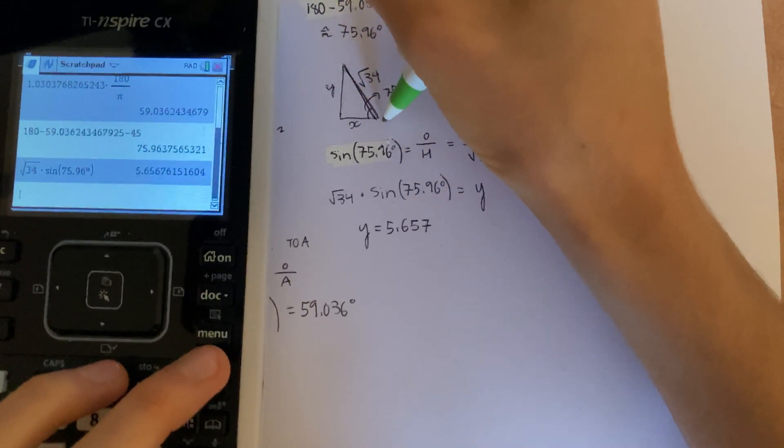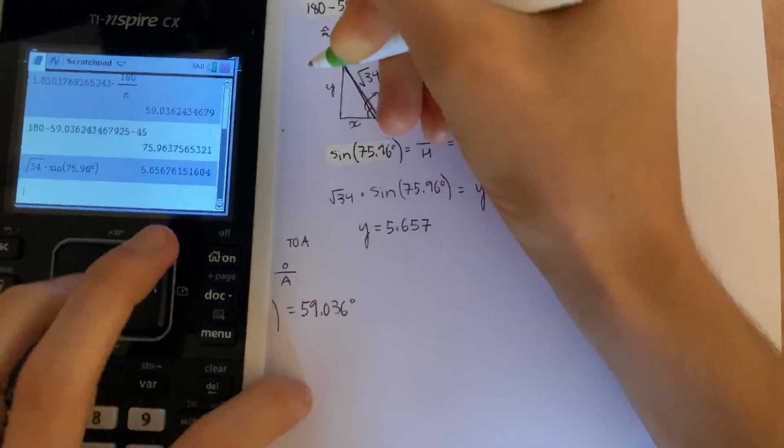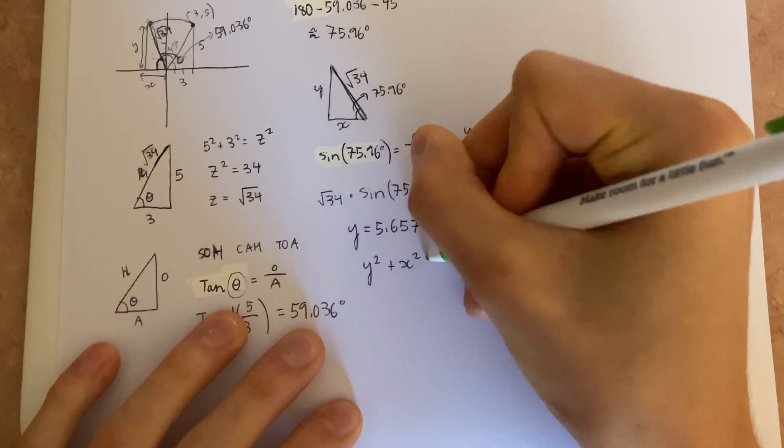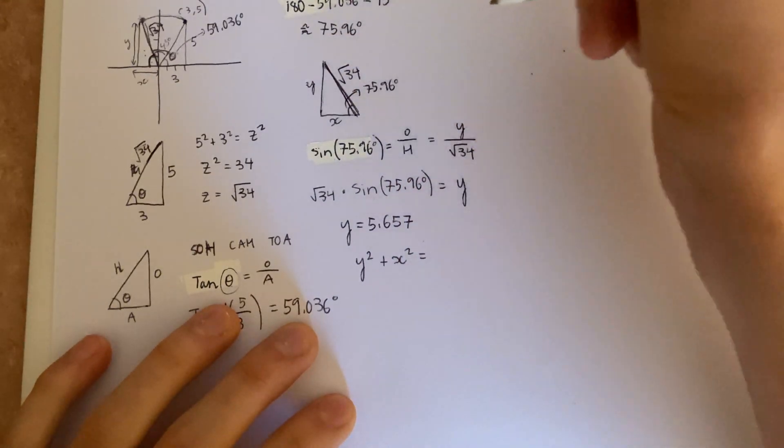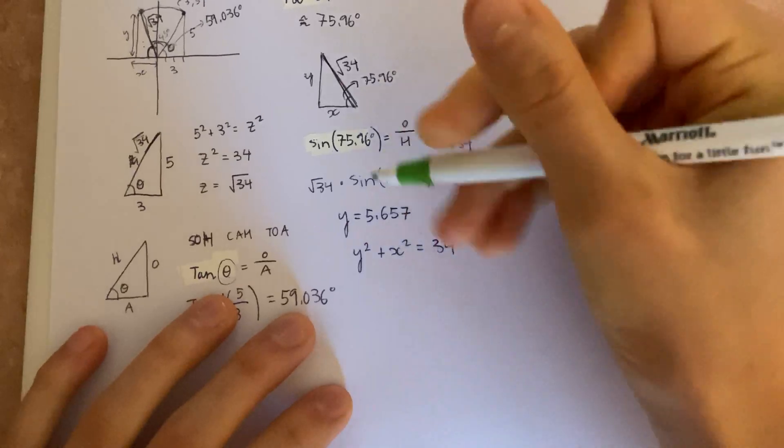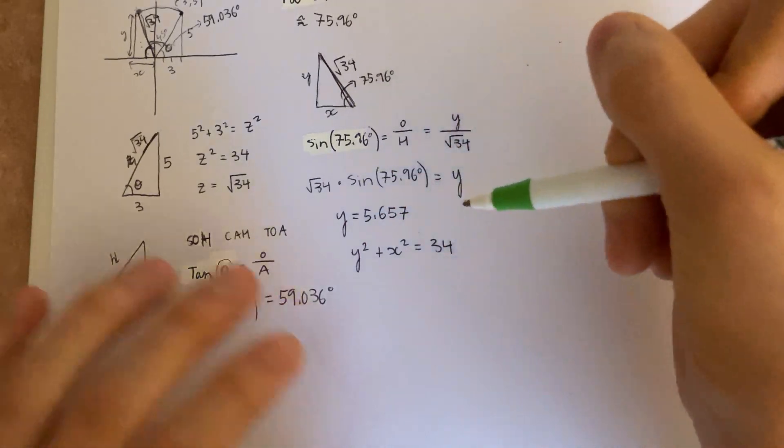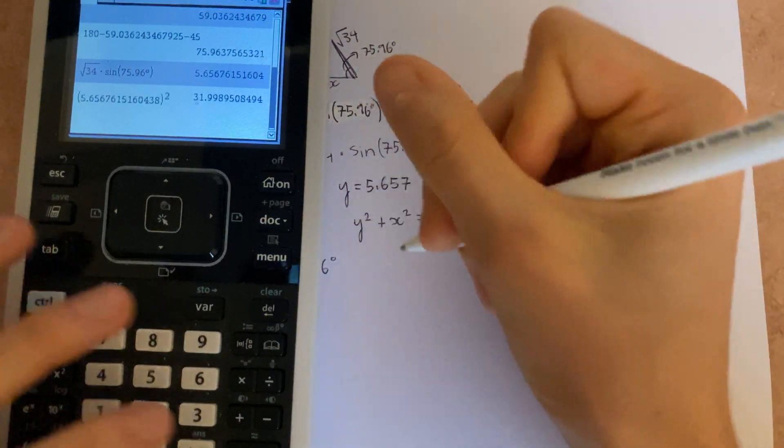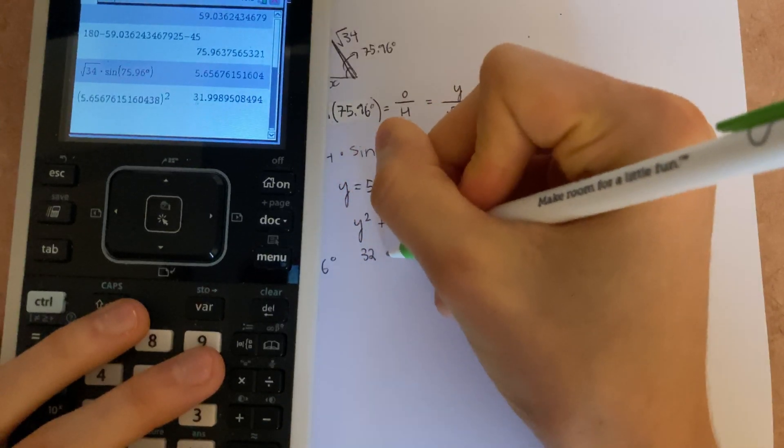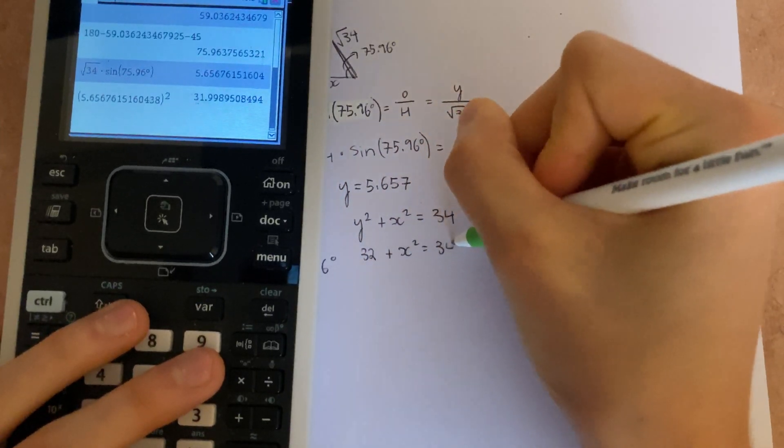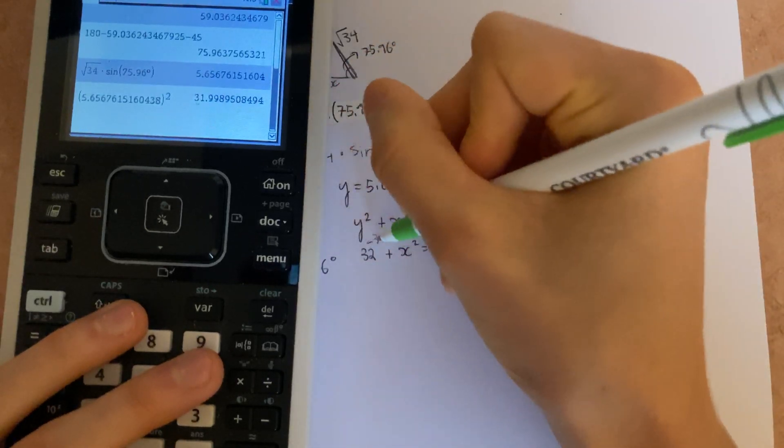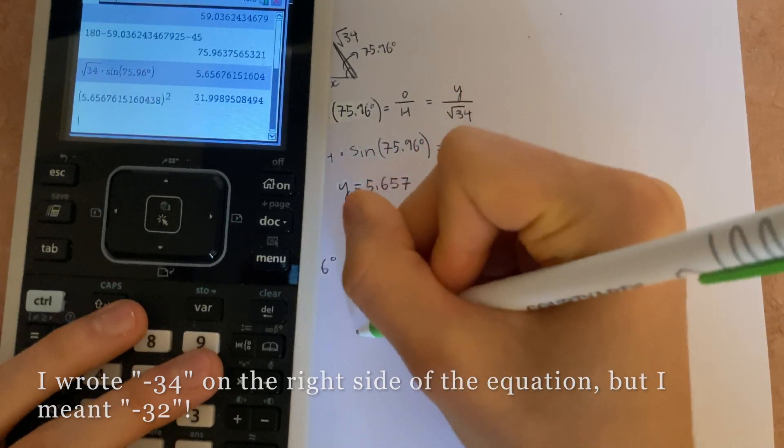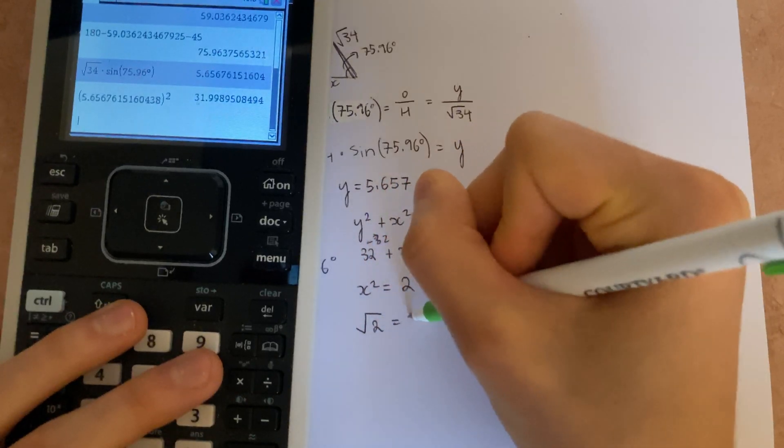Now we know y and the hypotenuse, so we can use the Pythagorean theorem to solve for x. So y squared plus x squared equals the square root of 34 squared, which is just 34. We know y equals 5.657. That means this squared is approximately 32, plus x squared equals 34. If we subtract 32 from each side, we get x squared equals 2. So that means the square root of 2 equals x.